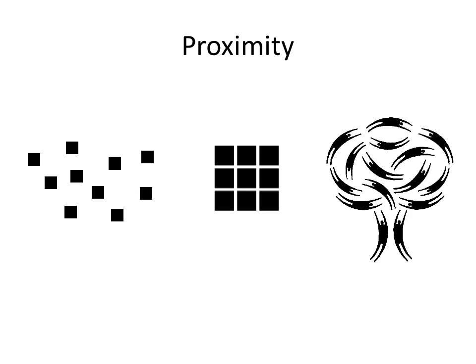Proximity occurs when elements are placed close together. They tend to be perceived as a group. The nine squares are placed without proximity. They are perceived as separate shapes.